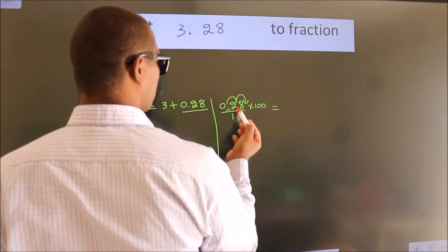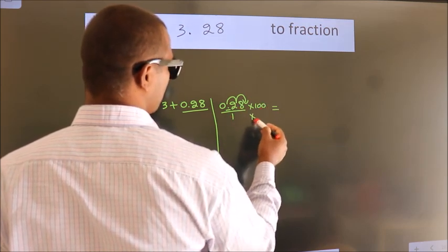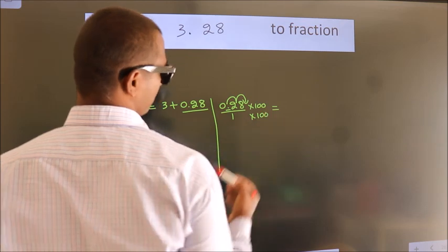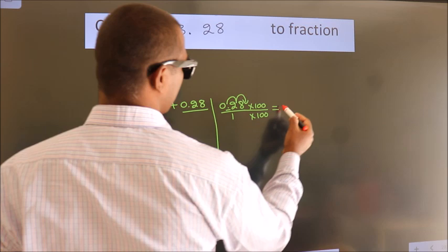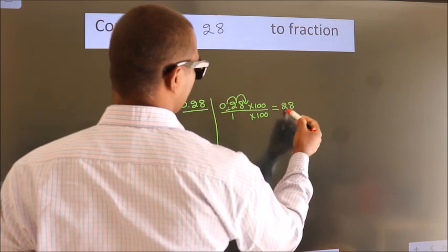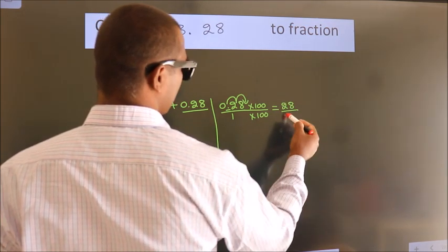Whatever you are multiplying in the numerator, in the denominator also do the same. Next 0.28 into 100 is 28. 1 into 100 is 100.